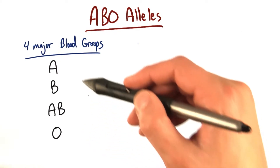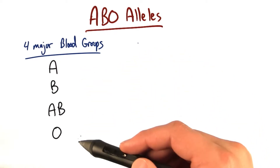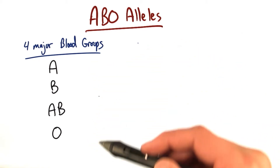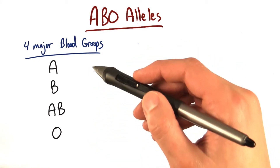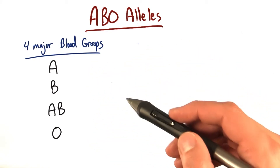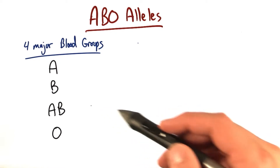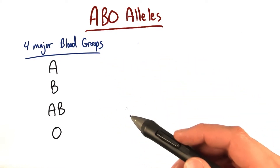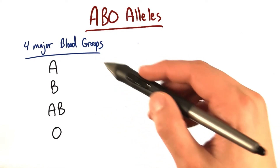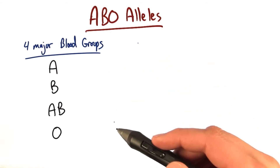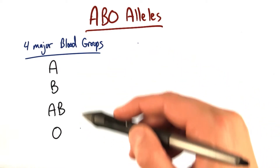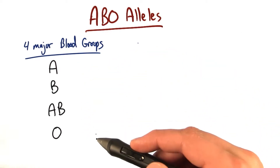But you have two alleles for the ABO gene — two possibilities. You could be two A's, or two B's, or an A and a B, or maybe you're an A and an O. And depending on those combinations, together that will result in which blood type you are.